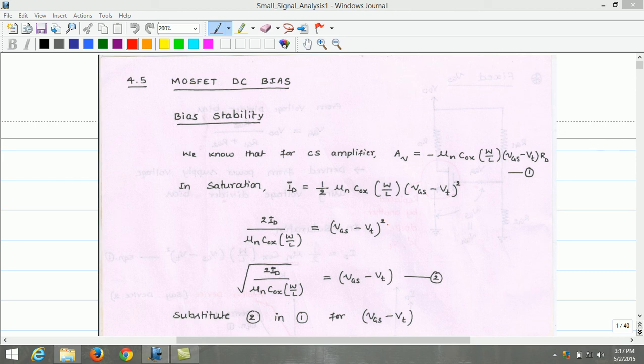To remove square, we shall take square root on left hand side. Therefore, VGS minus VT equals root of 2 times Id divided by mu n COx times W by L. Let us label this equation as 2.